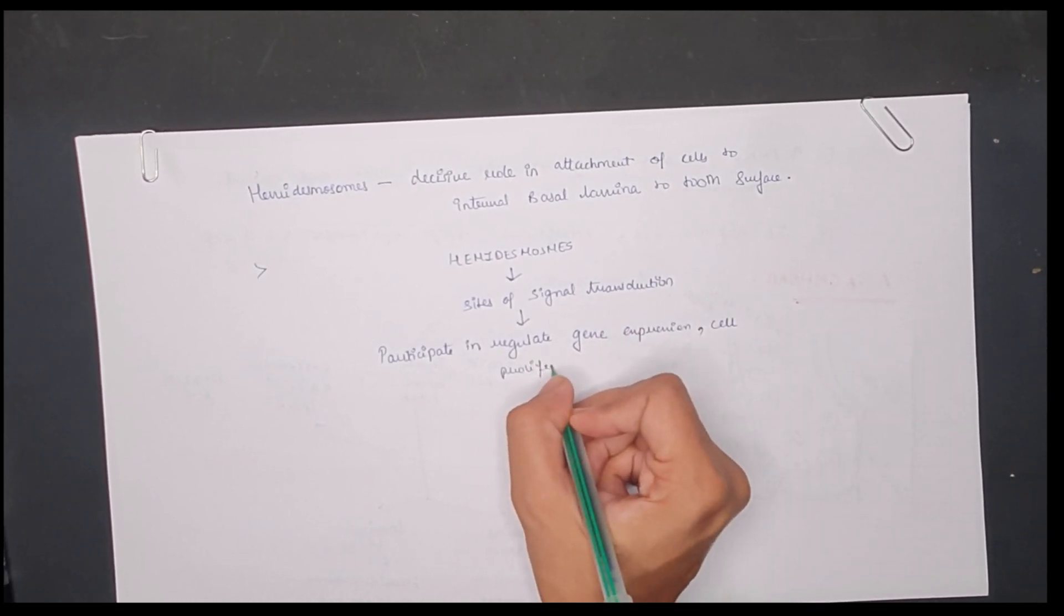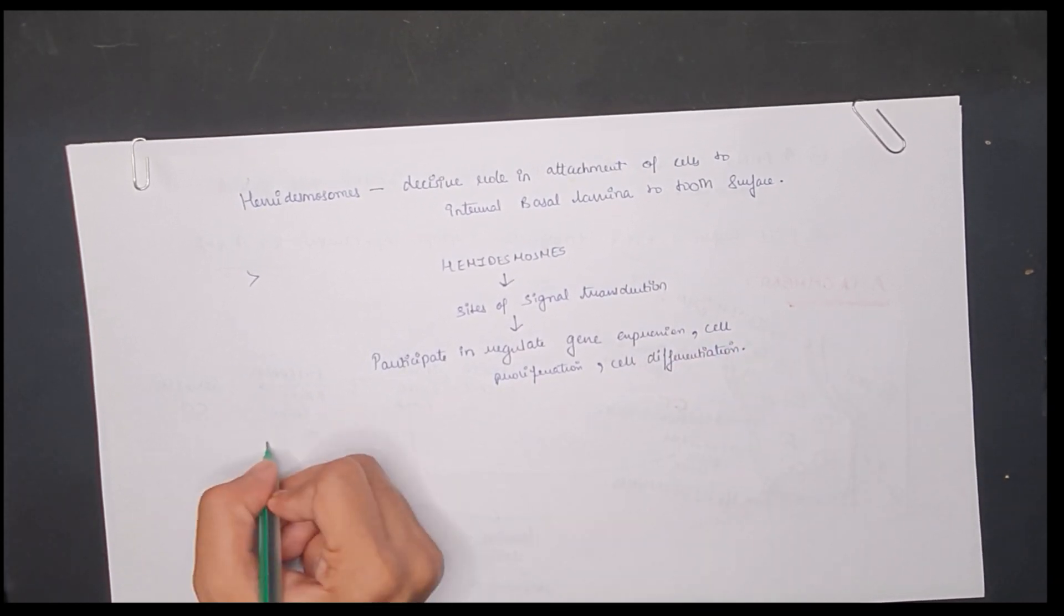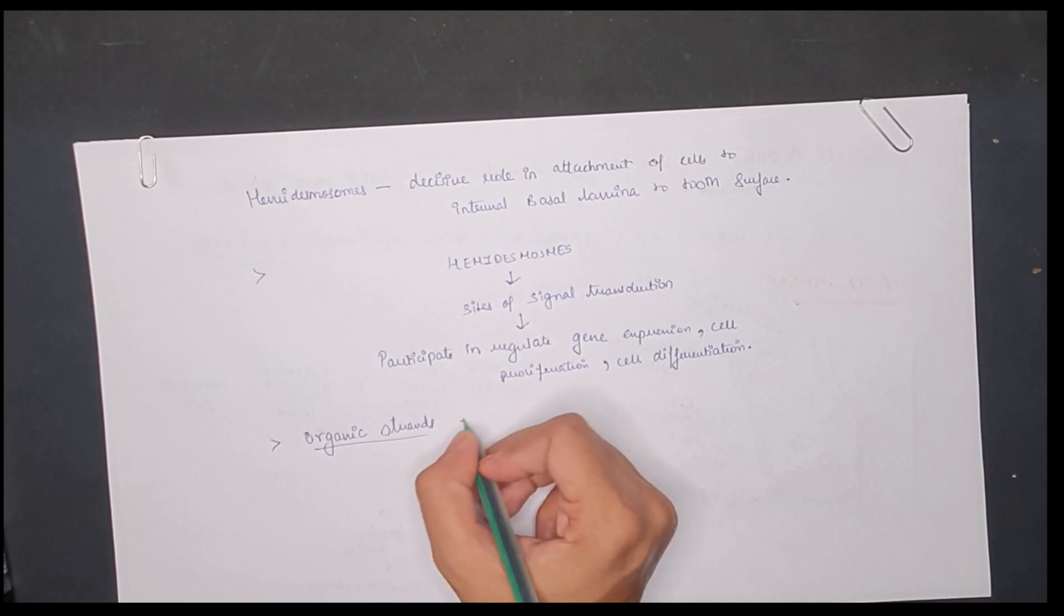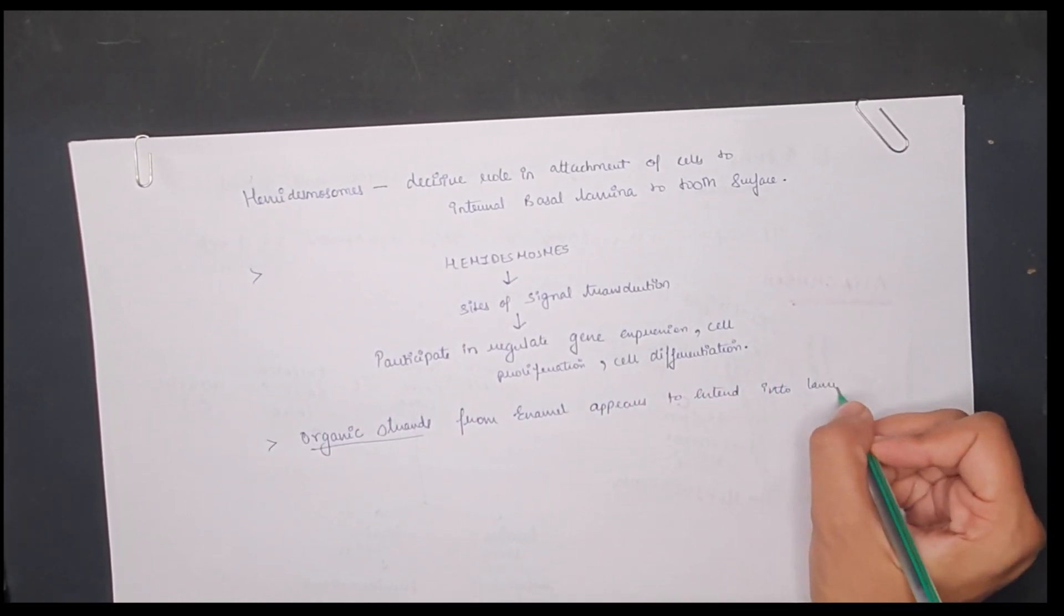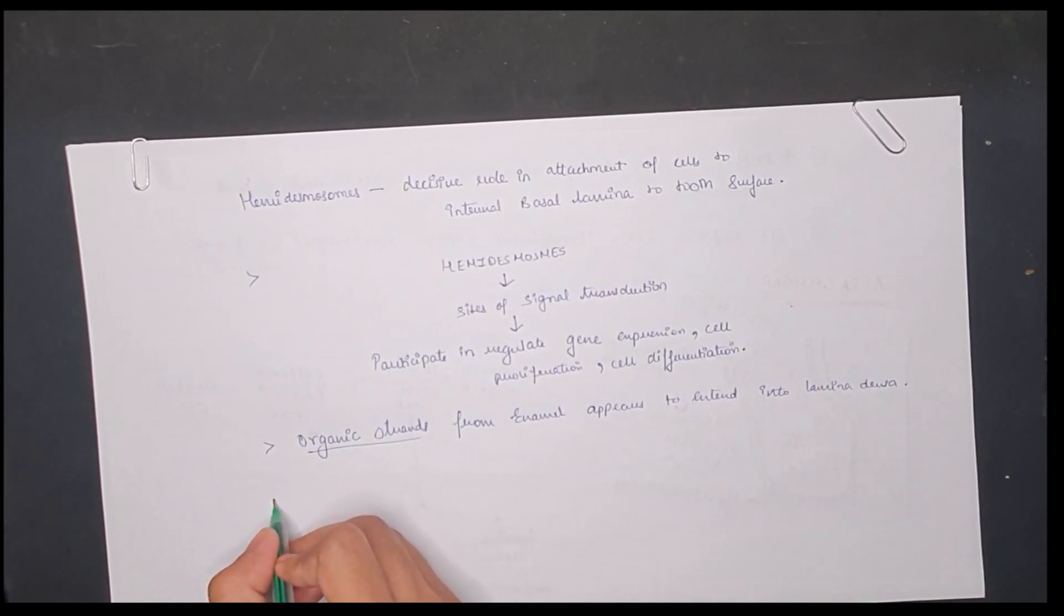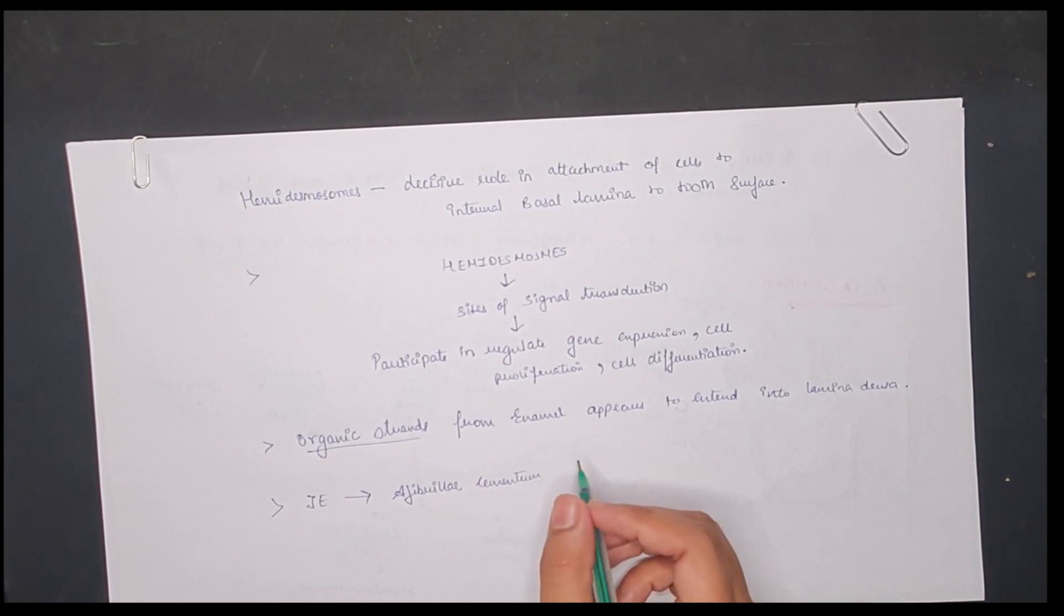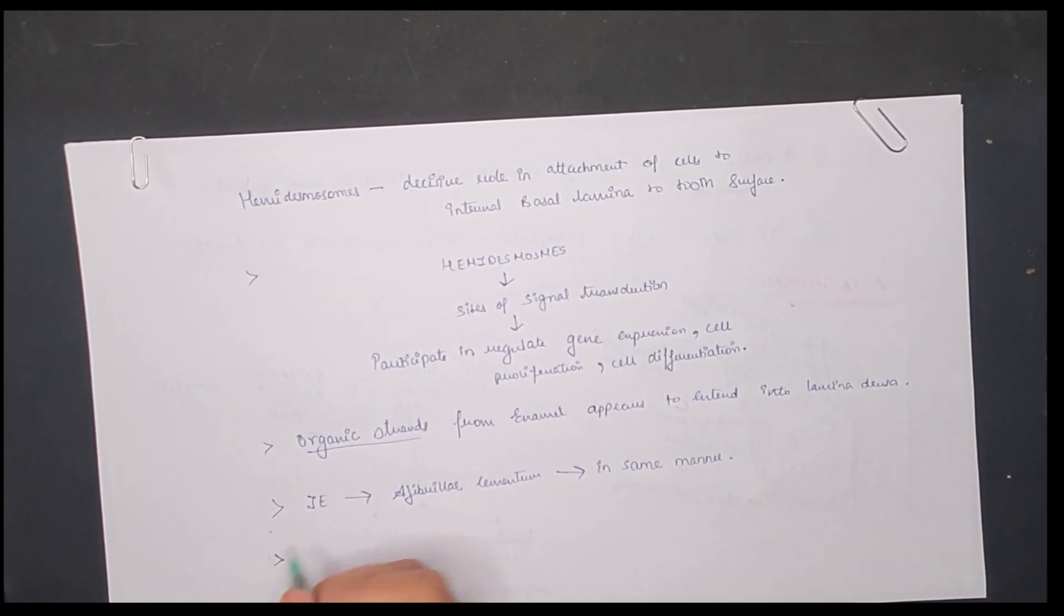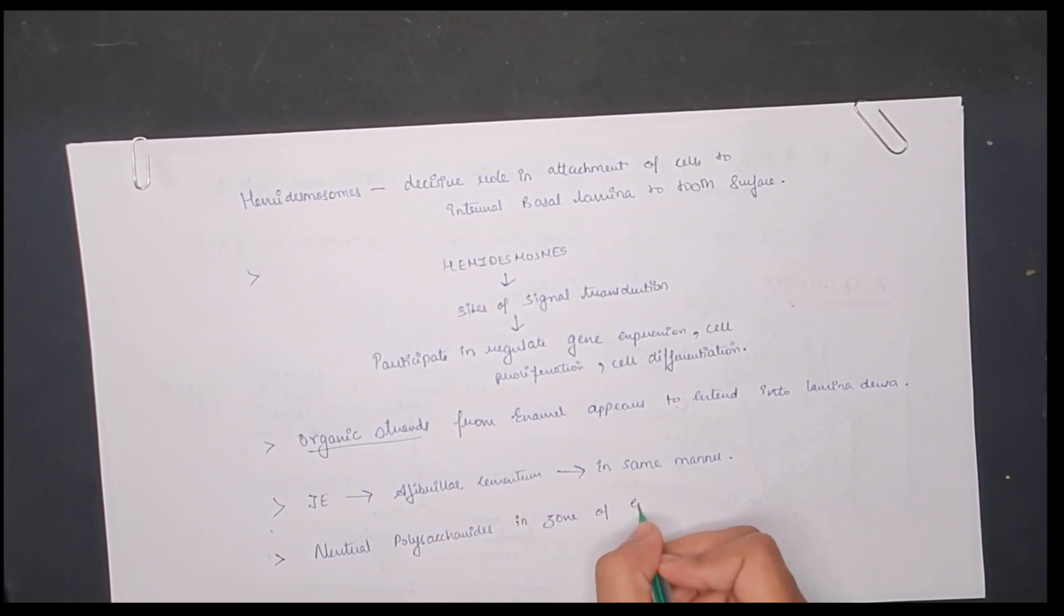Other, we can also see organic strands from enamel appear to extend into lamina densa. The junctional epithelium attaches to the afibrillar cementum present on crown and tooth in the same manner. Neutral polysaccharides in the zone of epithelial attachment are also seen.